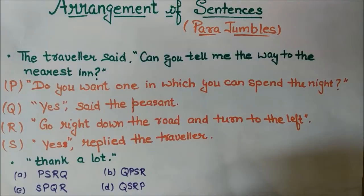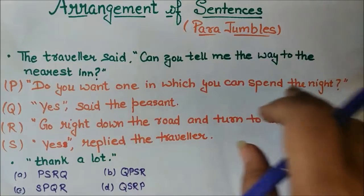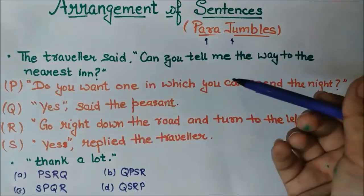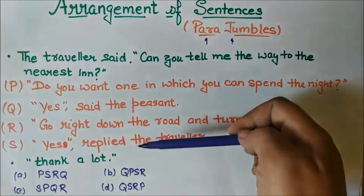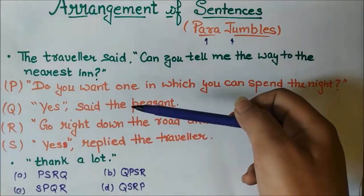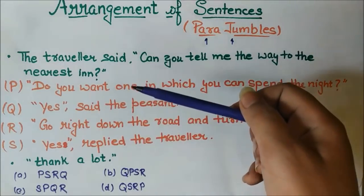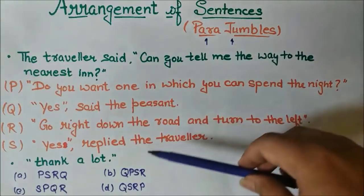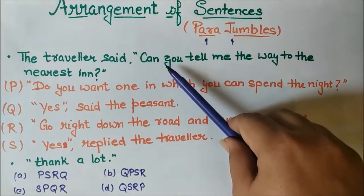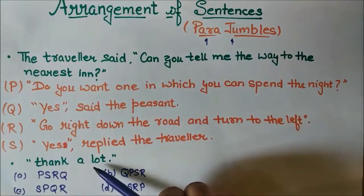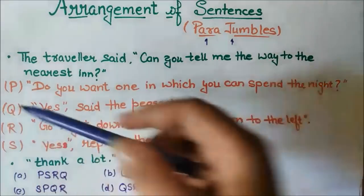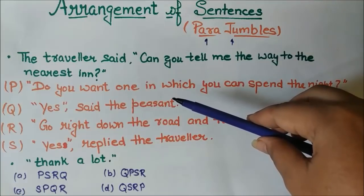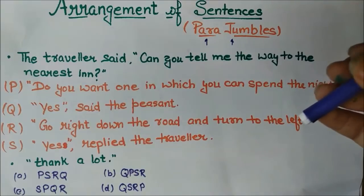Now let us see the questions. When we are doing some questions, I suggest you take a rough notebook, pen, or pencil with you so that you can write down the sequence. Starting with the first question — let me tell you what para jumbles is. In such questions, there are a few statements given. They are not in proper arrangement. We have to arrange these statements in a particular order which can convey a proper, meaningful statement.